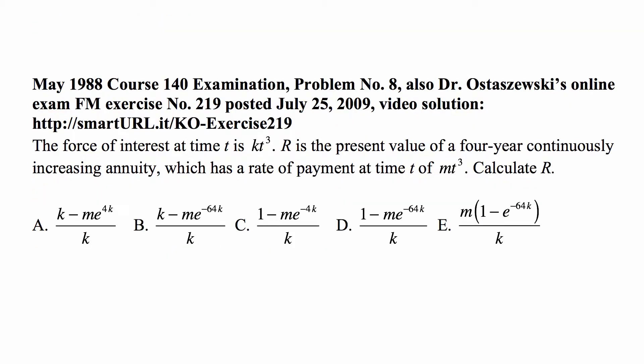Here's a problem for today for Exam FM on financial mathematics. The force of interest at time t is kt³. R is the present value of a four-year continuously increasing annuity which has a rate of payment at time t of mt³. Calculate R.